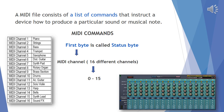A MIDI file consists of a list of commands that instruct a device — that device can either be an electronic organ or a sound card in a computer or in a mobile phone — how to produce a particular sound or musical note. Each MIDI command has a specific sequence of bytes. The first byte is the status byte, which informs the MIDI device what function to perform. Encoded in the status byte is the MIDI channel, and MIDI operates on 16 different channels, the table of which I have shown you on the screen.